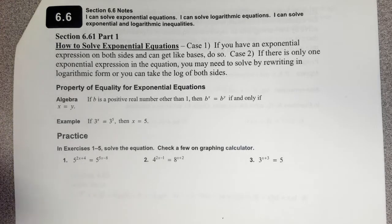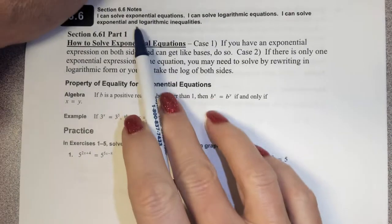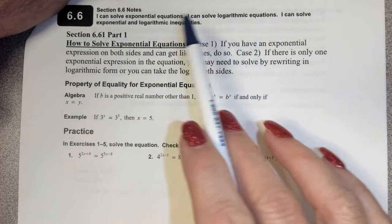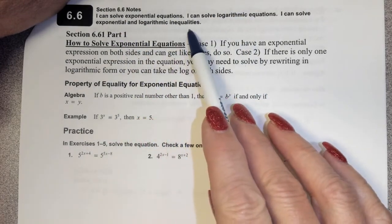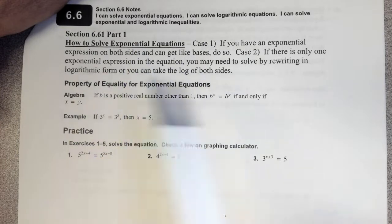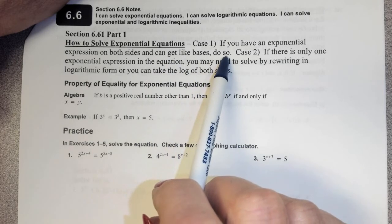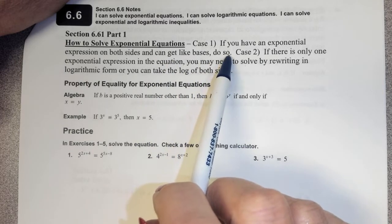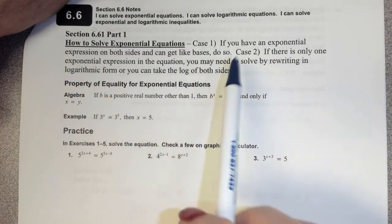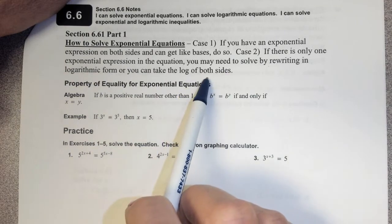Today we're looking at section 6.61 part 1 and we're going to be solving exponential equations. We also want to be able to solve log equations, and we're going to be looking at exponential and logarithmic inequalities in part 2. For today we're solving the exponentials first. If we have an exponential expression on both sides and we can get like bases, do so, because then all we have to do is set the exponential parts equal to one another. If there is only one exponential expression in the equation, you may need to solve by rewriting in logarithmic form or by taking the log of both sides.